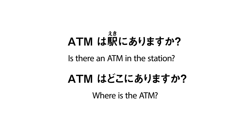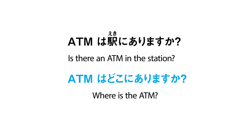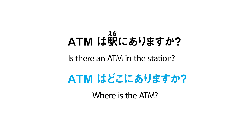Let's compare these two sentences. ATMは駅にありますか? ATMはどこにありますか? So you just need to replace 駅 with どこ. どこ is a question word meaning "where." ATMはどこにありますか?